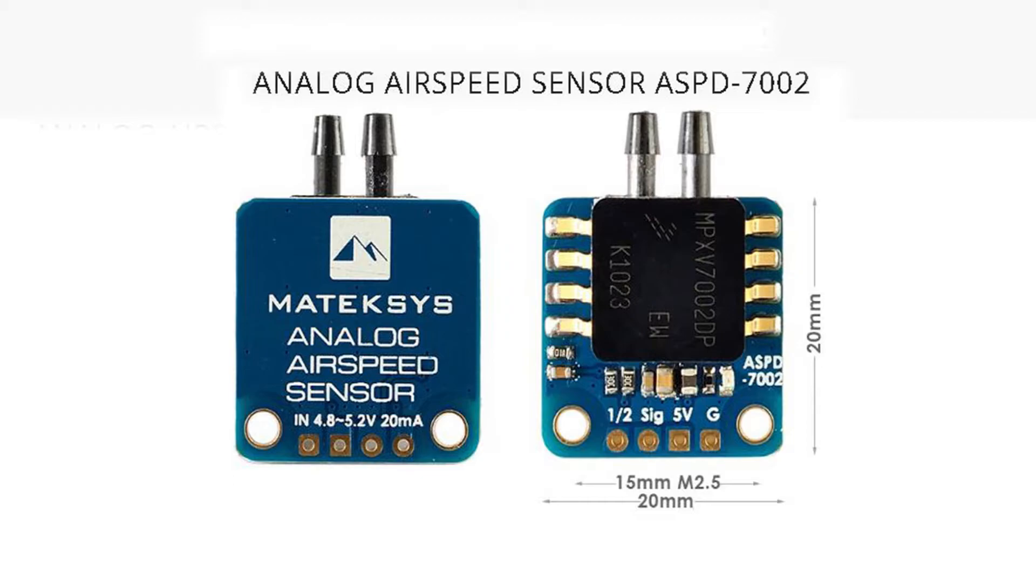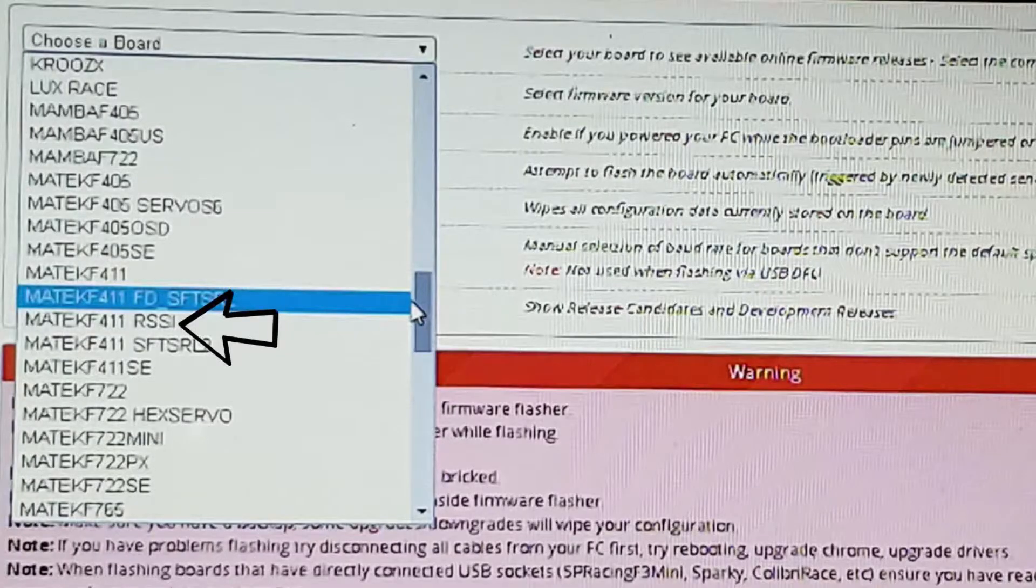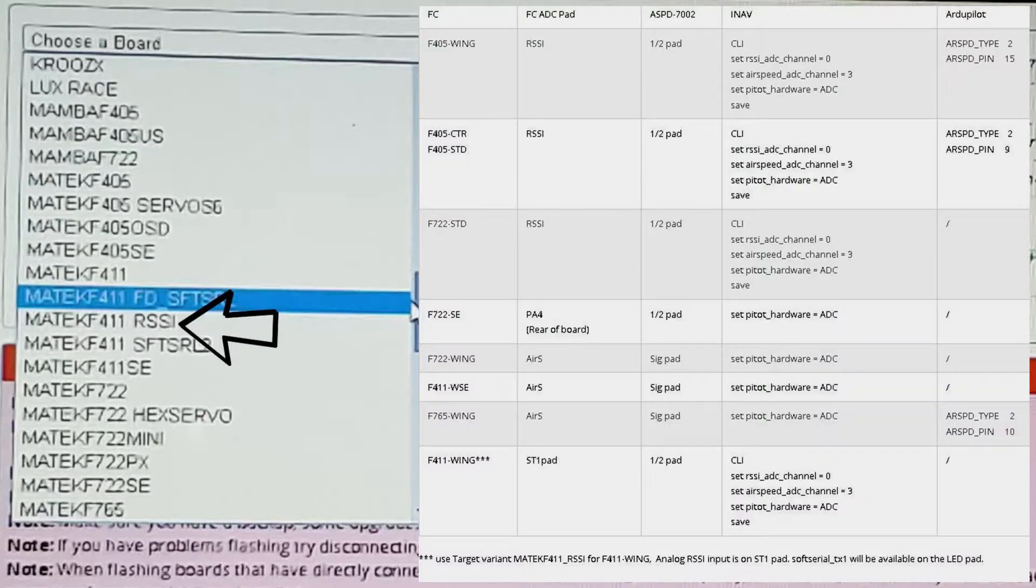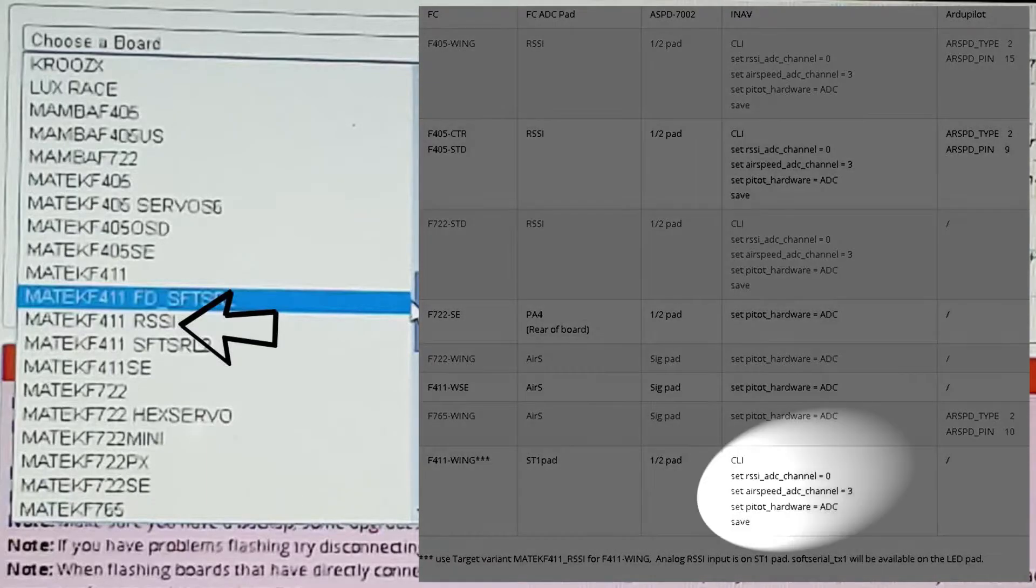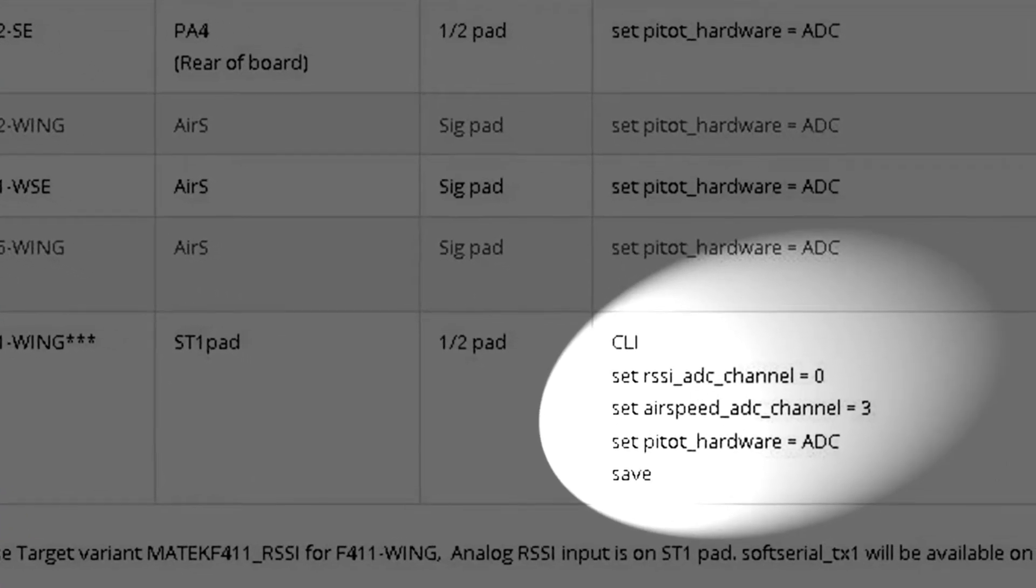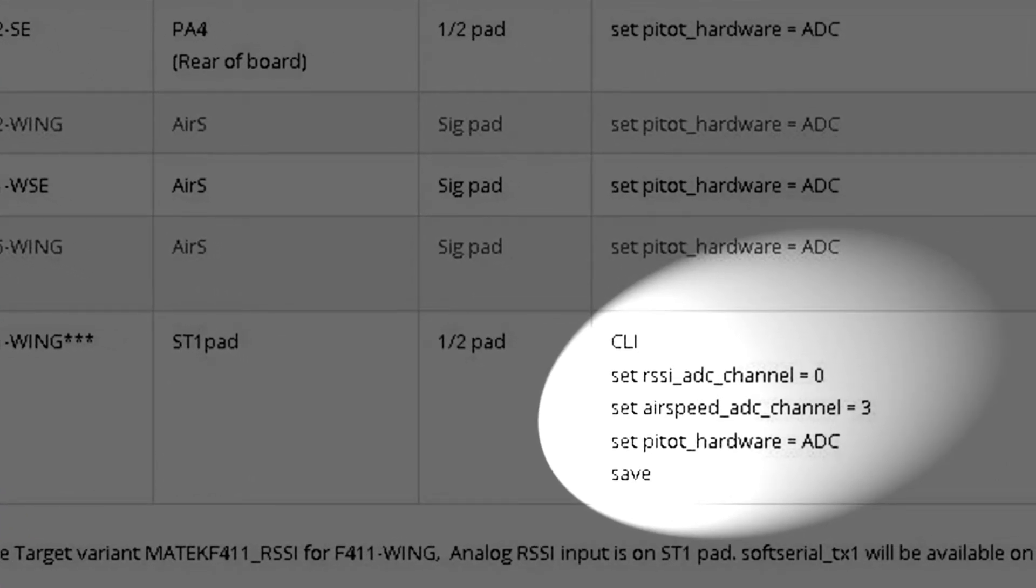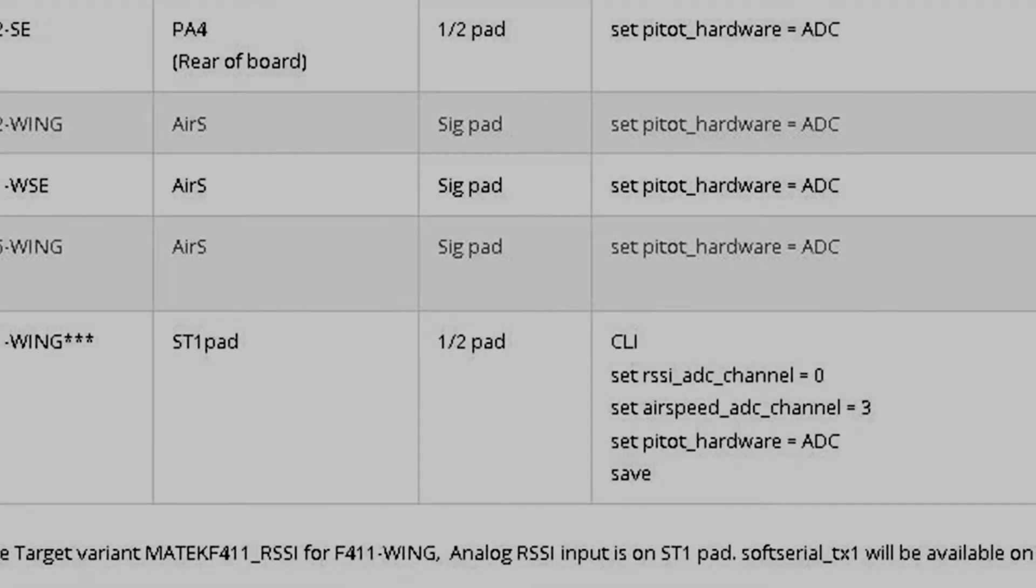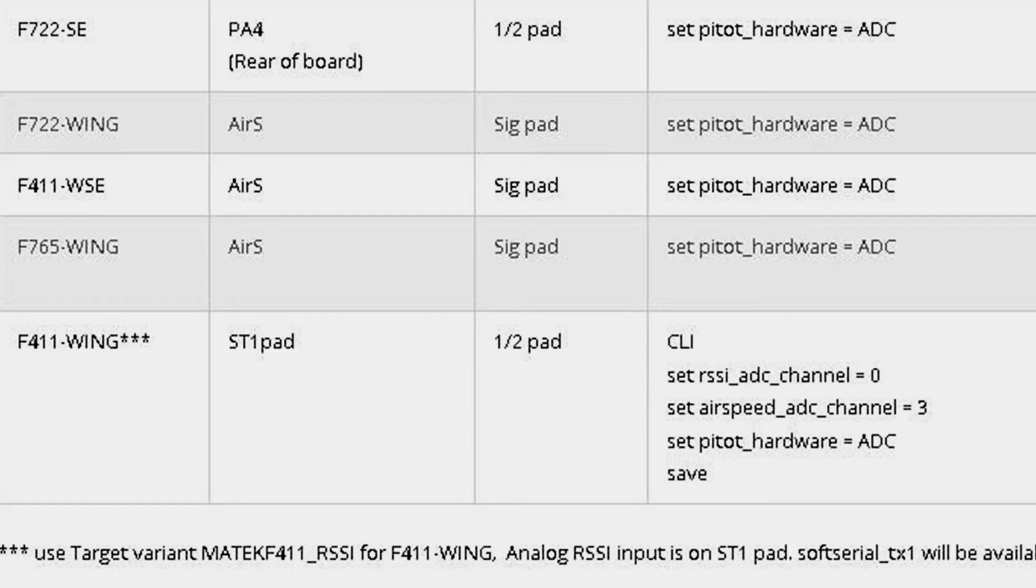Right. As I mentioned before in a previous video, when you're installing the firmware to the F411 wing flight controller, it's saying here, I'll put this up on the screen as well so you can see. There's a couple of CLIs you've got to put into iNav as well. You set those three up here. So your airspeed sensor is going to be running off an RSSI channel, ADC channel. So if we go down the bottom here, you can see target variant.